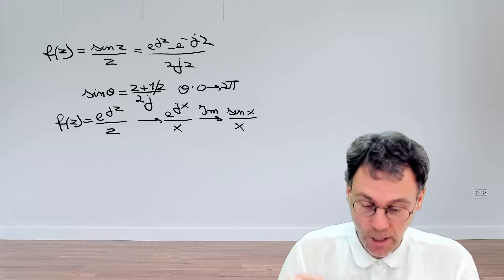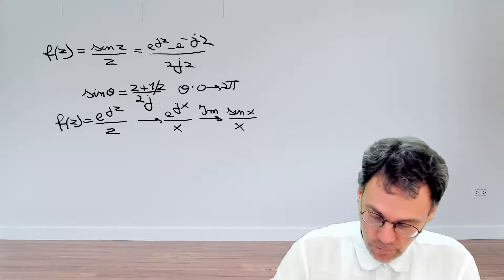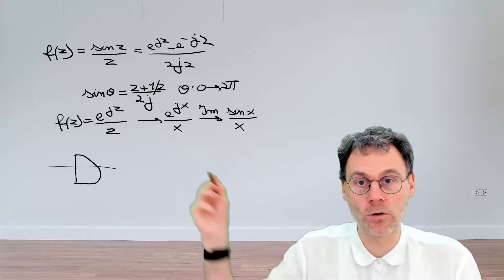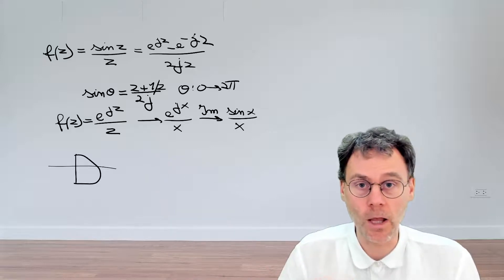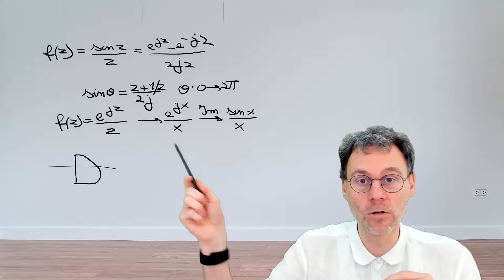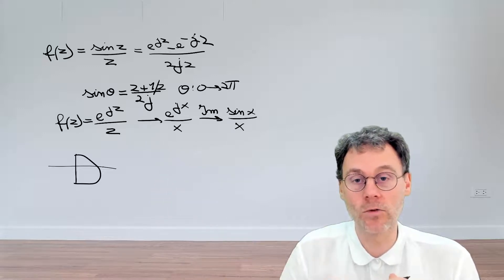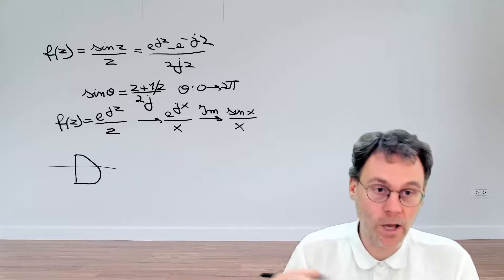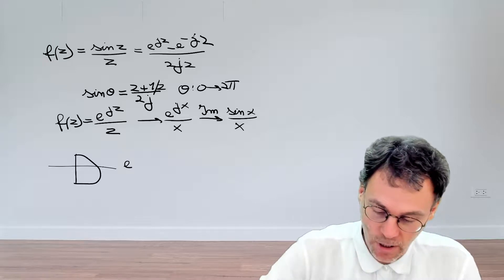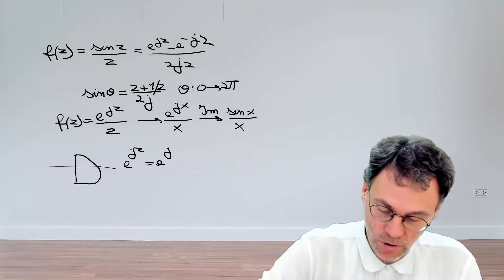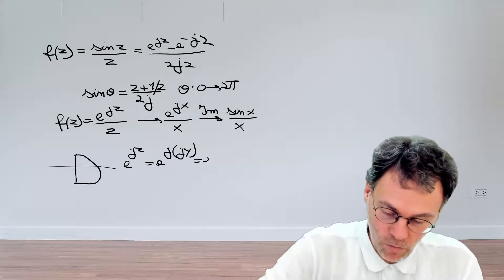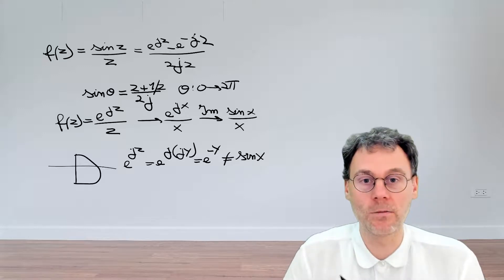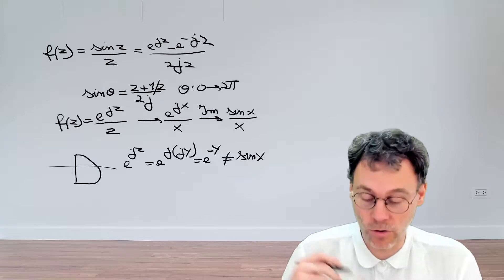Now let's look at the contour to use. The first contour suggested is in the right half-plane. The problem is there's nothing along the real axis, and we wanted to evaluate along the real axis. The line segments are on the imaginary axis, and on the imaginary axis e^(jz) becomes e^(j·jy) = e^(-y), which has nothing to do with our sine. That's a bad idea.